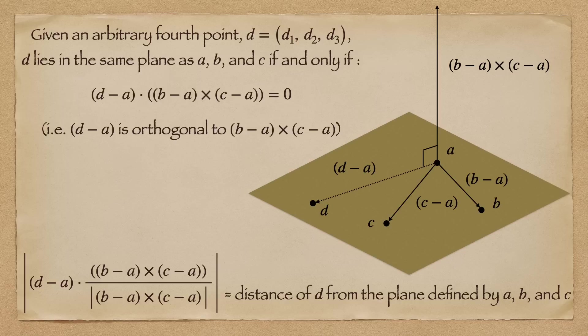If we introduce a fourth point D, then D is in the same plane as A, B, and C, if (D-A) is also orthogonal to the cross product of (B-A) × (C-A), which is equivalent to saying that the dot product of (D-A) and the cross product is equal to zero. If the dot product of (D-A) and that cross product is non-zero, we can actually calculate how far the point D is from the plane defined by A, B, and C using the formula above.